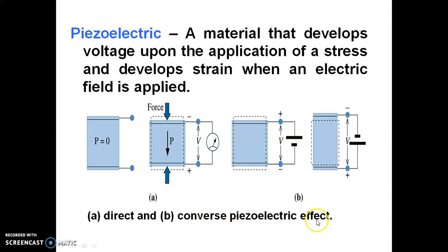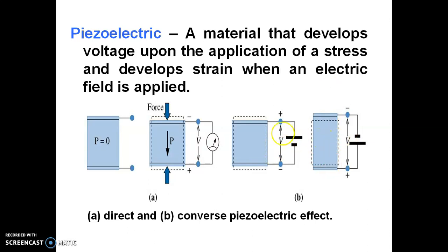That phenomenon — EMF being generated across the dielectric material due to mechanical stress — is called the piezoelectric effect. The converse piezoelectric effect is also observed: instead of applying stress, you apply voltage directly. As you increase the voltage, the size or dimension of the dielectric decreases either lengthwise or depthwise, depending on the direction you apply the voltage. If you reverse the field, its dimension increases. This is the converse piezoelectric effect.